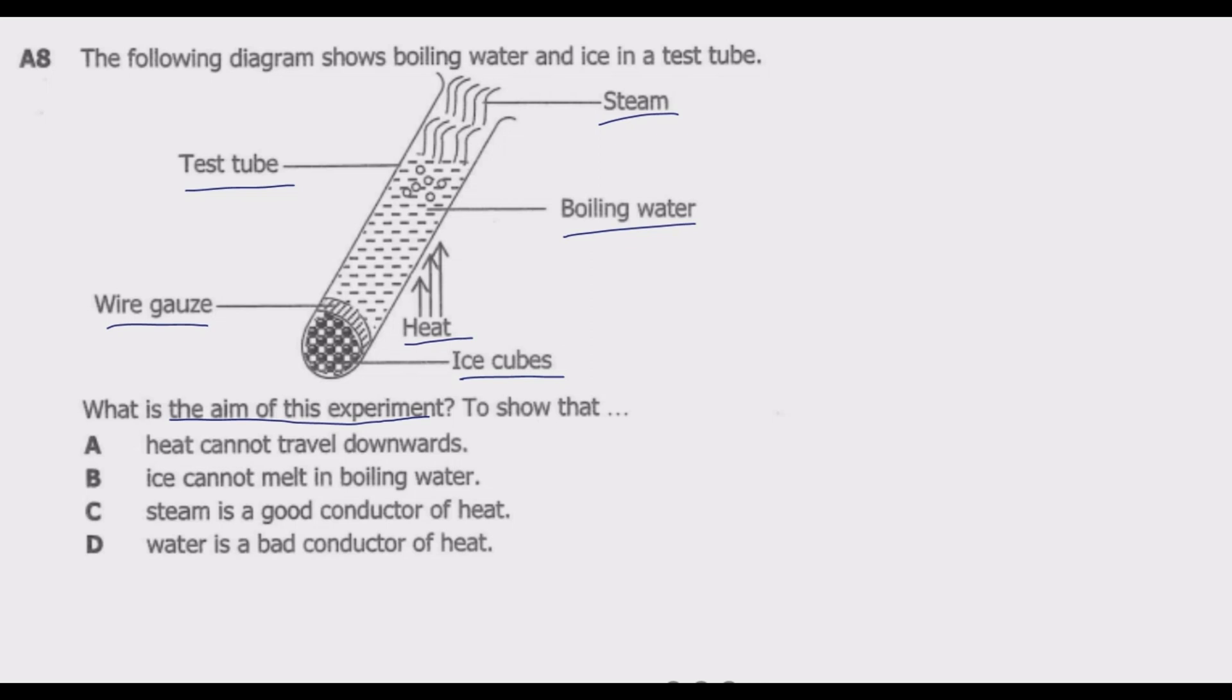So we have: A. Heat cannot travel downwards. B. Ice cannot melt in boiling water. C. Steam is a good conductor of heat. D. Water is a bad conductor of heat. So what is the purpose of this experiment? This experiment is done to show that water and liquids and gases are poor conductors of heat. That's the purpose. So what you notice from these options, D in this case is the correct answer.